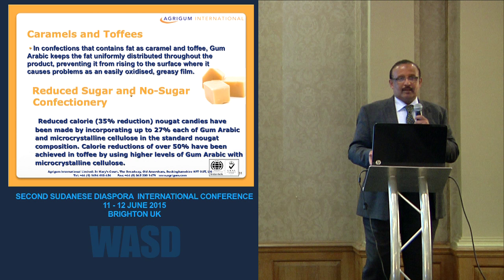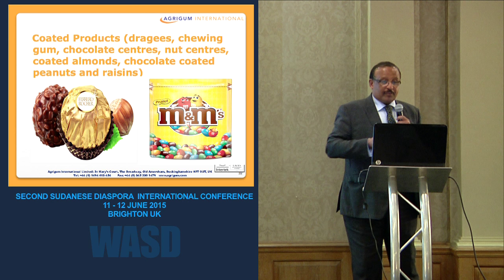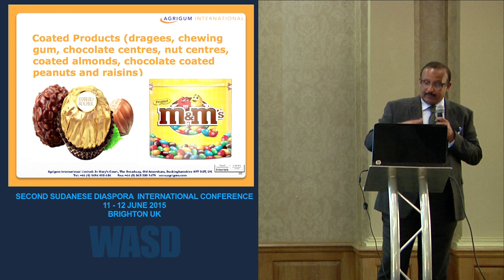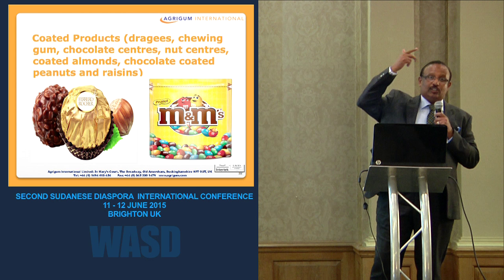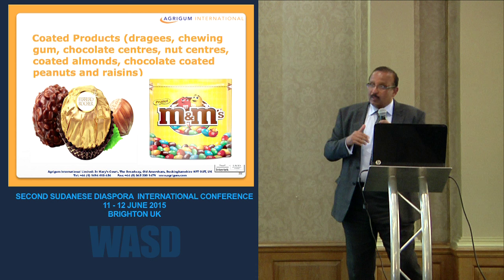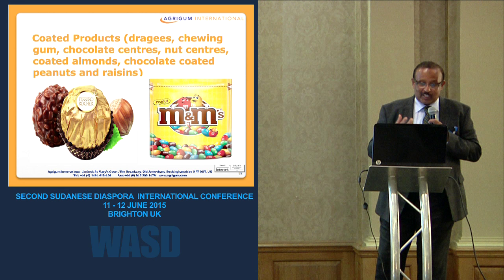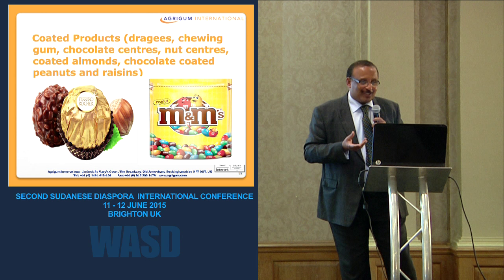Because the gum is bland, they use sorbitol or other sweeteners to provide sweetness. One famous application is in nut centers: gum Arabic forms a film or coat around the nuts, and then the chocolate layer goes on top. The gum Arabic film creates a seal to prevent migration of oil or moisture to the surface, keeping the product crunchy — which is why Ferrero Rocher is nice and crunchy.